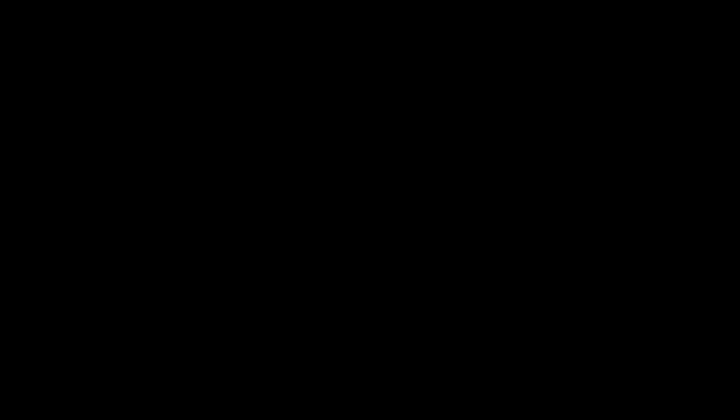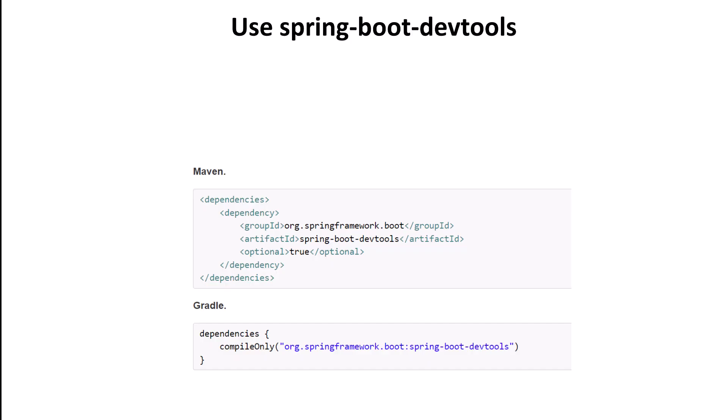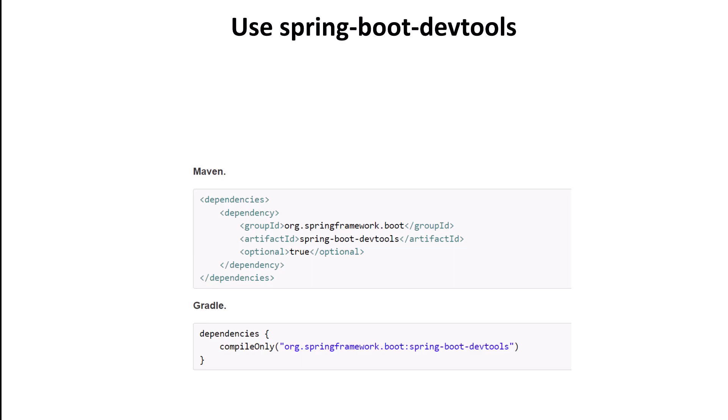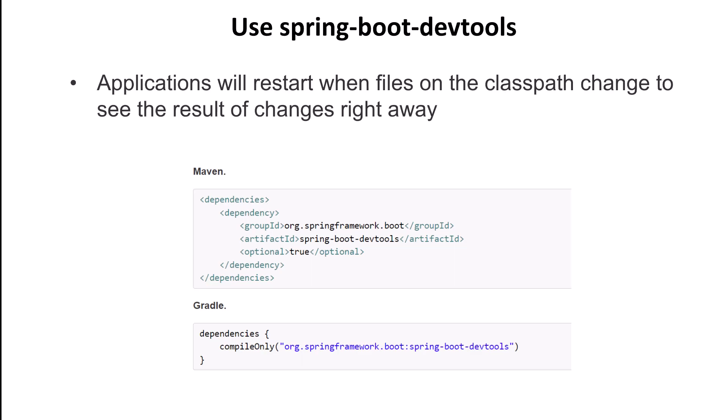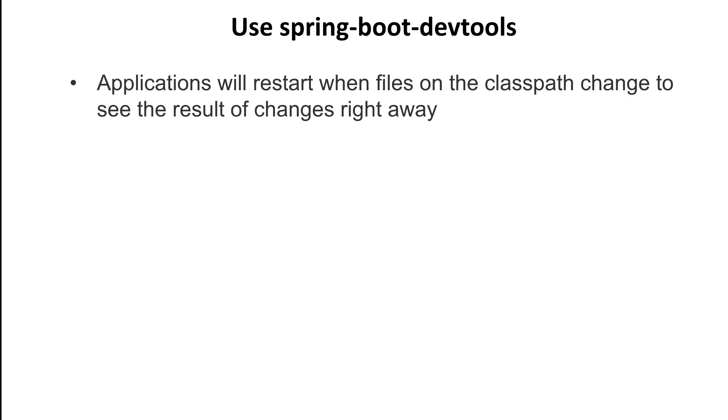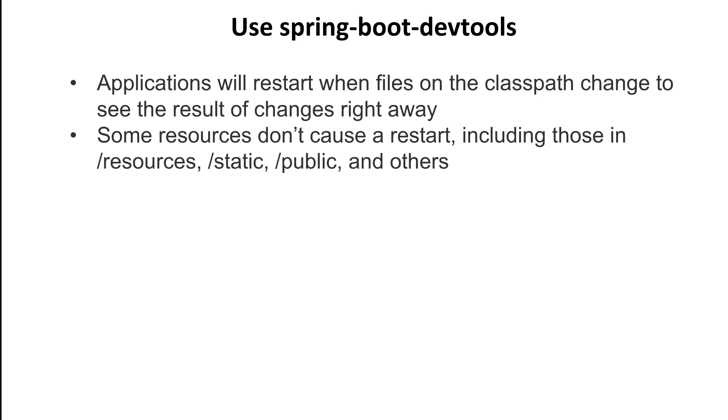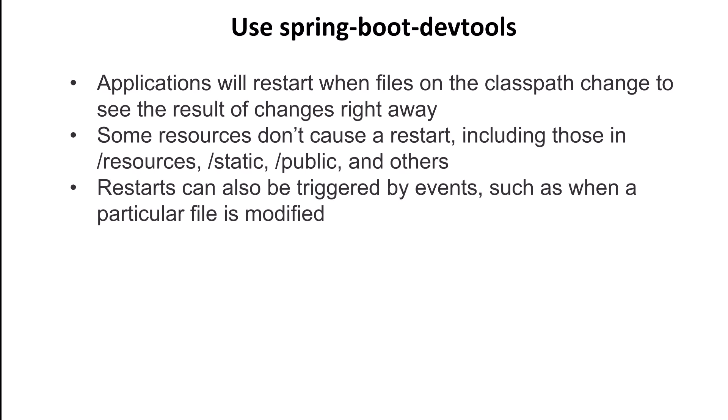Next up, our number two item: use Spring Boot DevTools for faster development. The Spring Boot DevTools dependency enables automatic restart of the application when code changes are detected, which can greatly speed up the development process. Using DevTools, your application will restart when files in the classpath change, so you can see the results right away without the need to start and stop things yourself. Not every change will cause a restart, including changes made to /resources, /static, /public, and a few others, but you can set things so changes to a particular file you specify will trigger a restart.